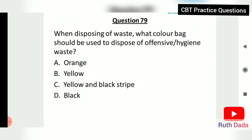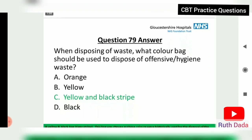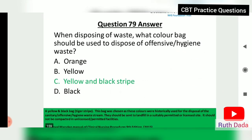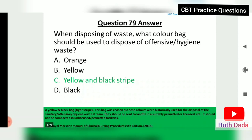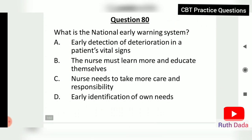Question 79: When disposing of waste, what color bag should be used to dispose of offensive hygiene waste? A yellow bag with a black stripe is recommended. Question 80: What is the National Early Warning System? It is a system for early detection of deterioration in a patient's vital signs. The National Early Warning Score allows for early identification and referral of patients at risk of deterioration.